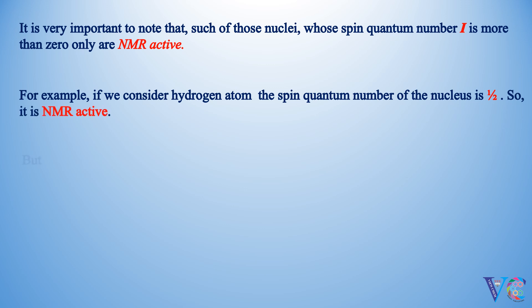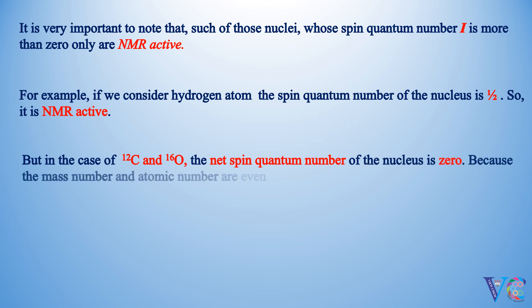But in the case of 12C and 16O, the net spin quantum number of the nuclei is 0, because the mass number and the atomic number are even. Hence, these are NMR inactive.